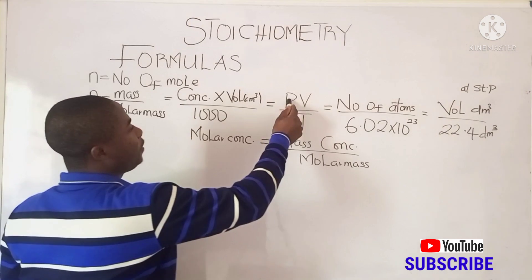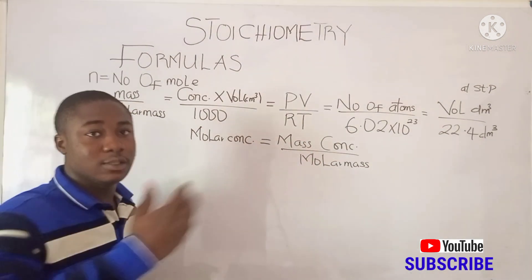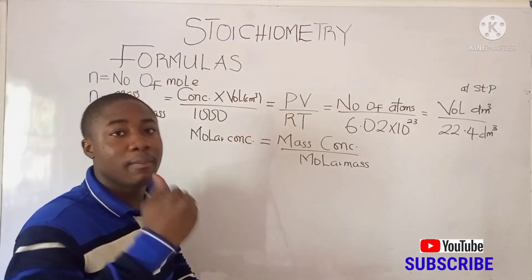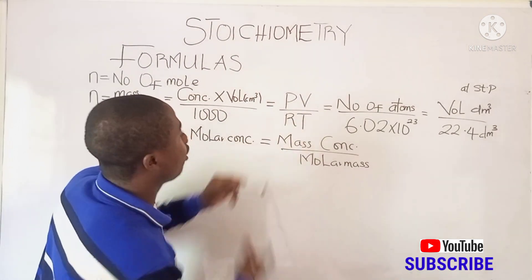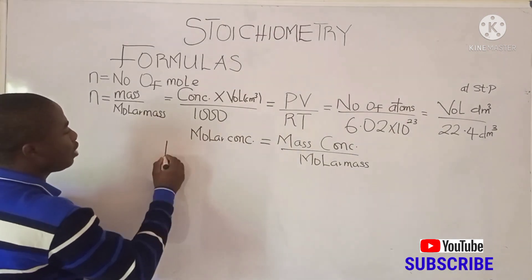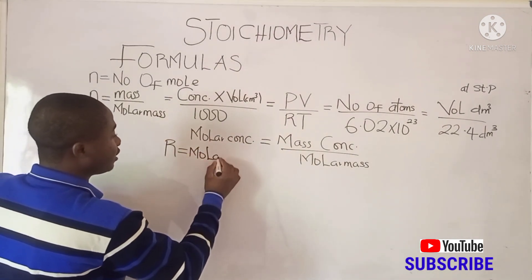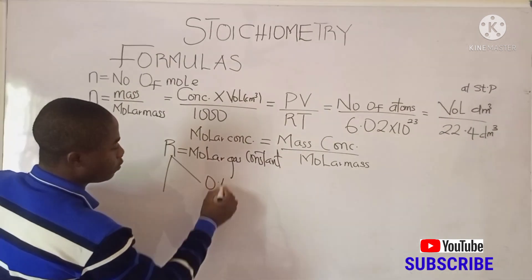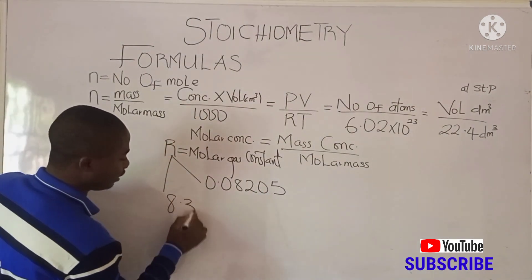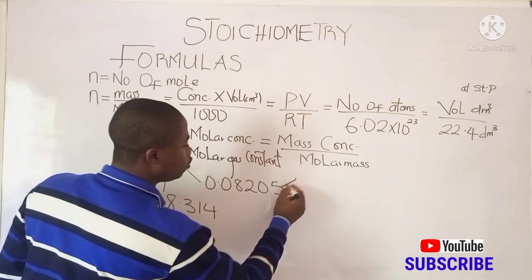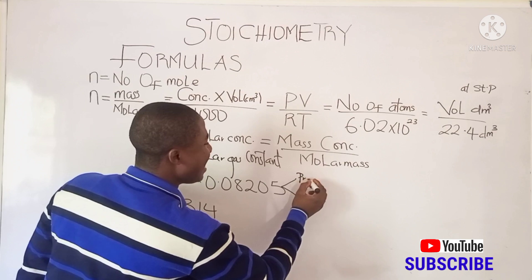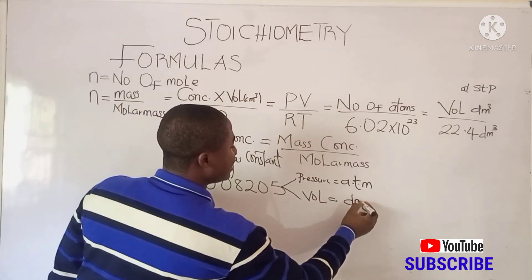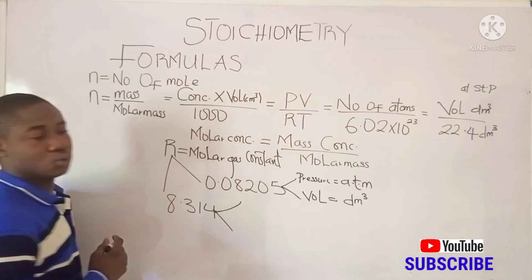Number of moles can also be given as n = PV / RT, where P is pressure, V is volume, T is temperature in Kelvin, and R is the molar gas constant. There are two important values of R to note: 0.08205 and 8.314. The value 0.08205 is used when pressure is in atmospheres (atm) and volume is in dm³.